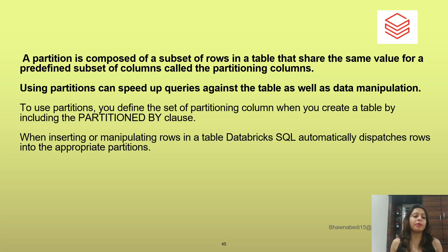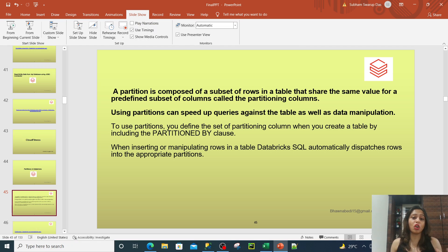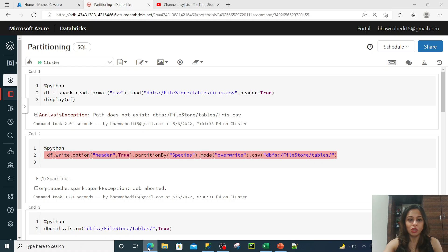The same thing happens when you're trying to write to a file in Databricks and you define partition by columns. Let's say you partition by column A — if that column has 10 distinct values, all the rows belonging to one particular subset will come together. We'll do the demo first and then I'll tell you what is the importance of it, why we should do it, and what kind of columns you should or should not use for partitioning.